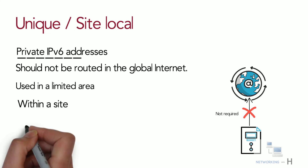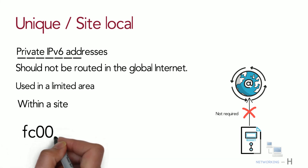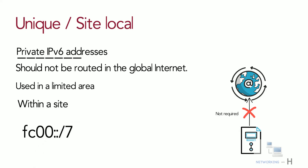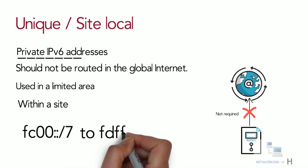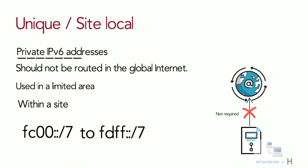Unique local addresses have the prefix FC00::/7, which results in an address range from FC00::/7 to FDFF::/7.